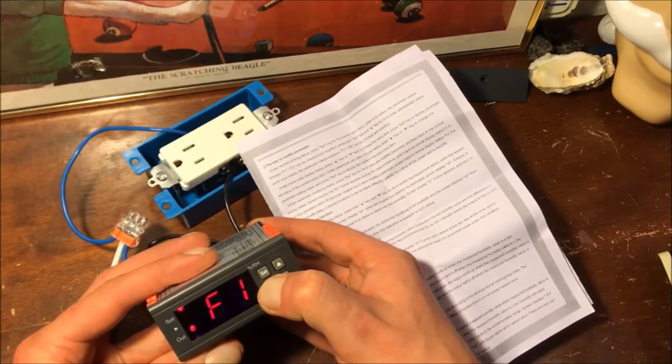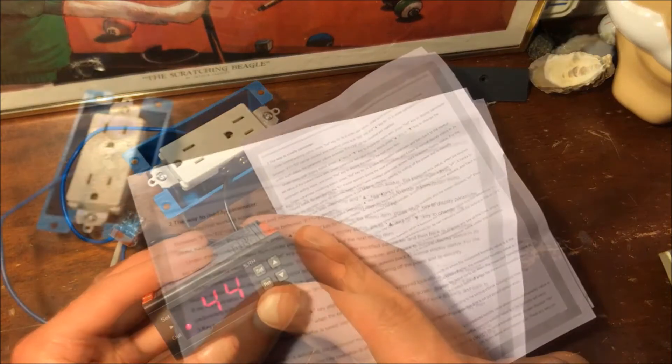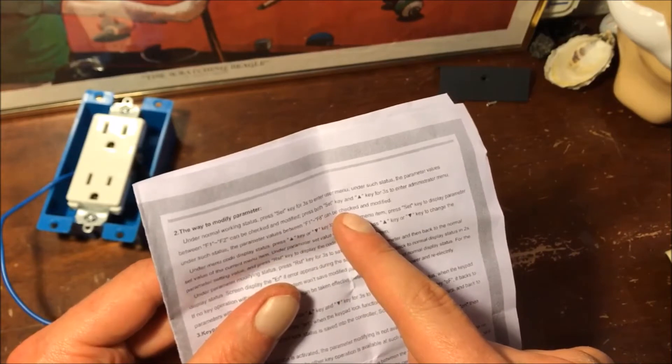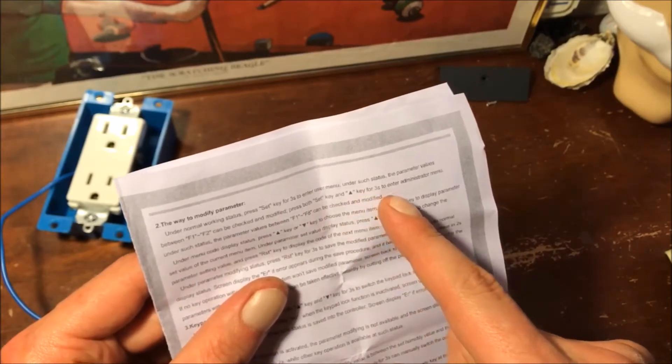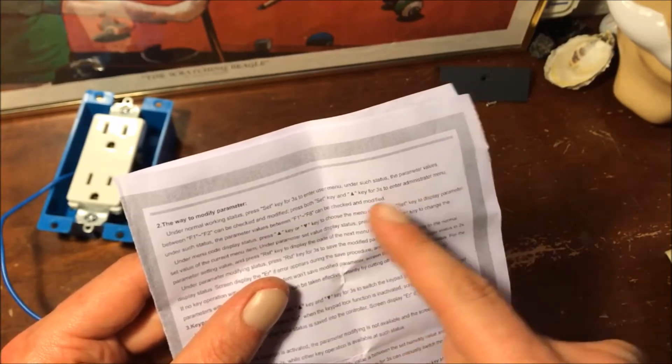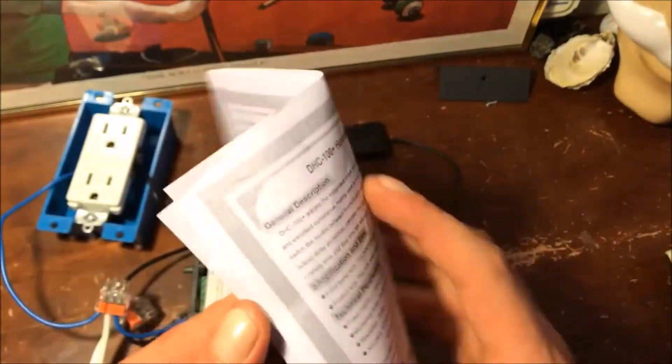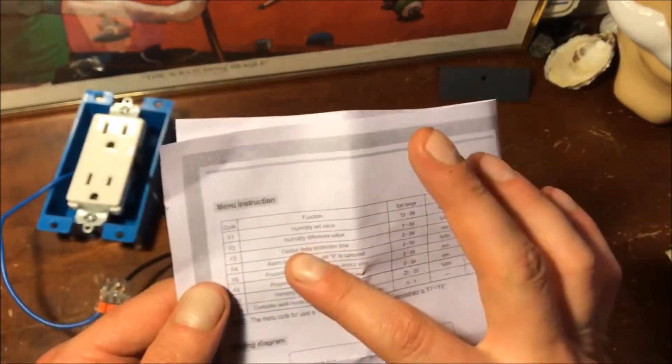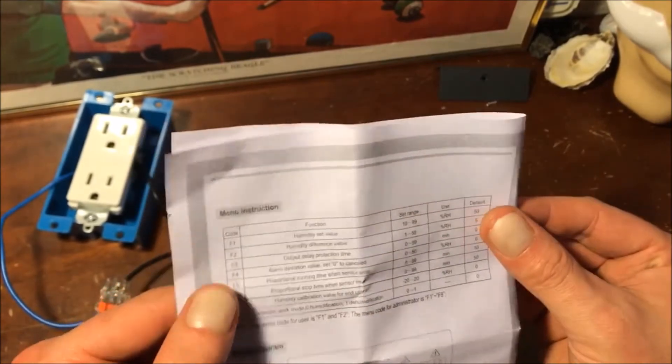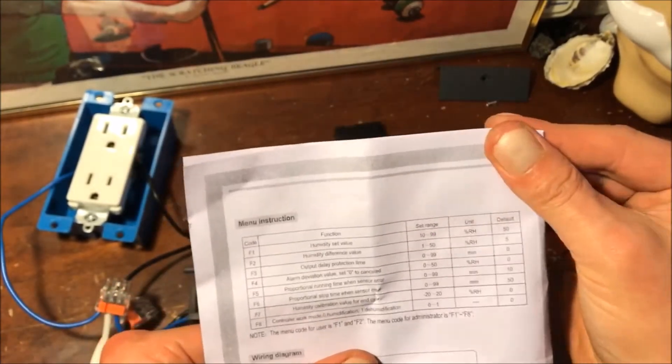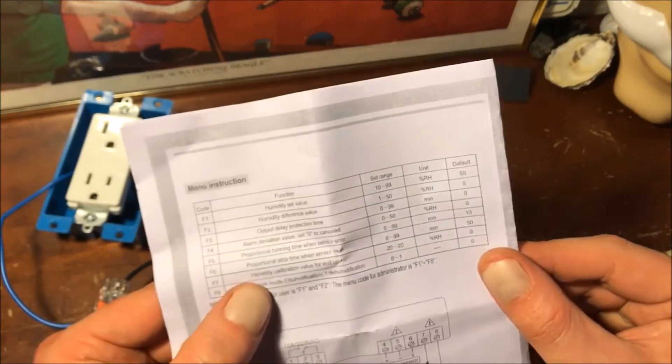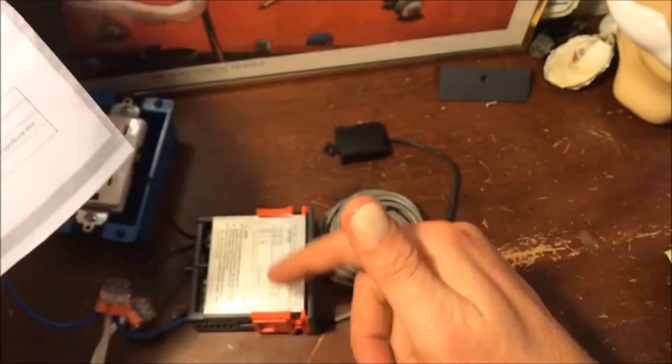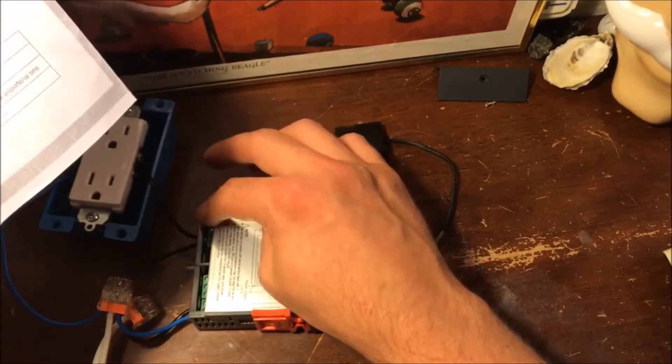One, two, three. Okay, press both set key and up key for three seconds to enter administration menu. That's where we can access all these other parameters like the alarm. You have a delay so you don't screw up your humidifier. Calibration value, okay. And F8 controller work mode.